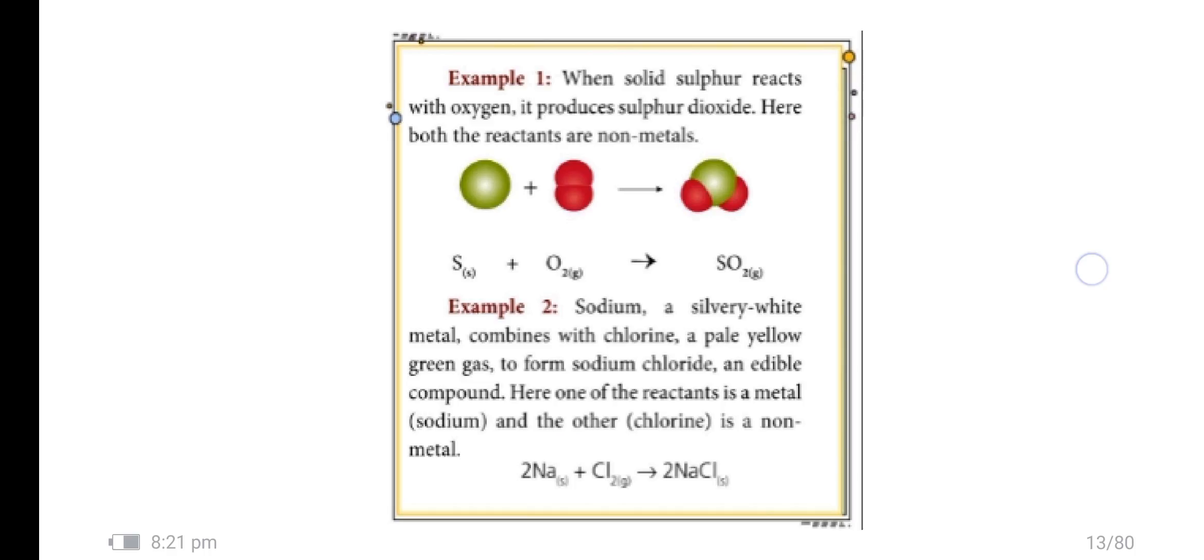Sodium, a silver white metal, combines with chlorine, a pale yellow green gas, to form sodium chloride, an edible compound. Hence, one of the reactants is the metal sodium and the other chlorine is a non-metal.